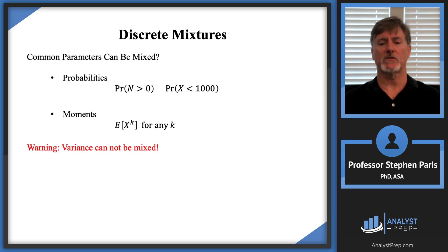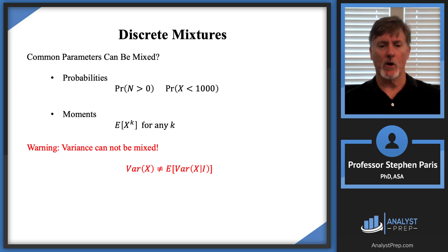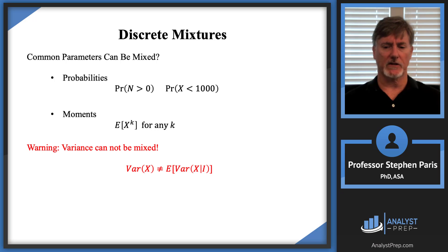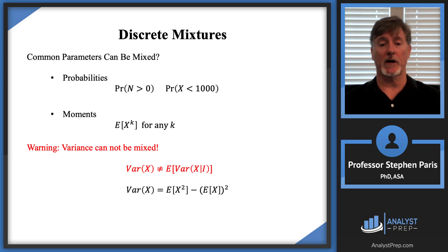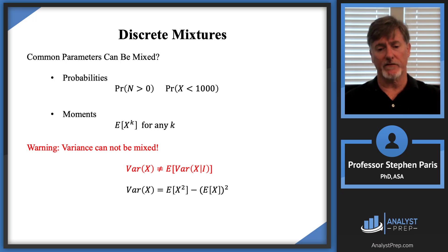The warning is that variances cannot be mixed. The variance of a random variable is not equal to the expected value of the variance given the indicator. The variance is always equal to the second moment minus the square of the first moment, and while the first moment and second moment can each be mixed, variances cannot.